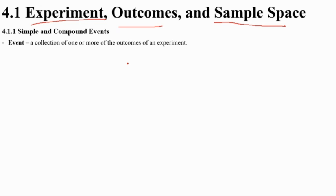Today we talk about simple events and compound events. An event is a collection of one or more outcomes of an experiment. A simple event is just one event, while a compound event involves more than one event.